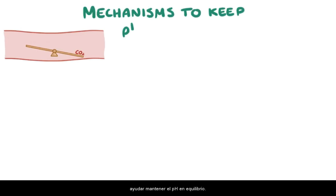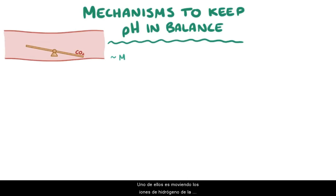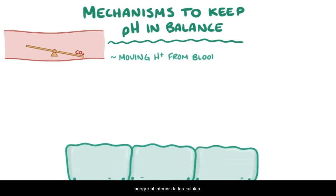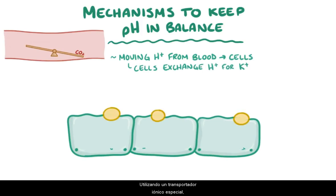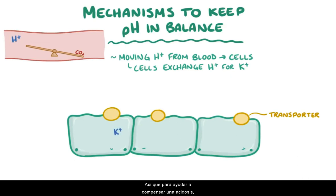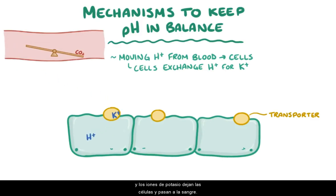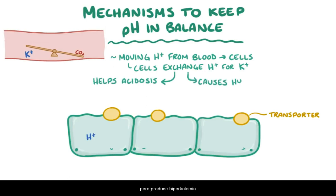If there's a decrease in the bicarbonate concentration in the blood, which threatens to decrease the blood pH, the body has a number of important mechanisms to help keep the pH in balance. One of them is moving hydrogen ions out of the blood and into cells. To accomplish this, cells usually have to exchange a hydrogen ion for a potassium ion, using a special ion transporter located across the cell membrane. So in order to help compensate for an acidosis, hydrogen ions enter cells and potassium ions leave the cells and enter the blood. This might help with the acidosis, but it results in hyperkalemia.